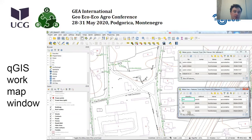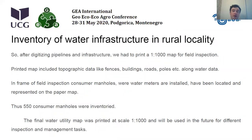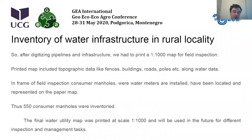This is an example of the QGIS map window. You can see the line map layers, water lines, water points, and their attribute data tables. After digitizing pipelines and infrastructure, we had to print a 1 to 1,000 map for field inspection. The printed map included topographic data like fences, buildings, roads, poles, etc., along with water data. During field inspection, consumer manholes where water meters are installed were located and represented on the paper map. In total, 550 consumer manholes were inventoried. The final water utility map was printed at scale 1 to 1,000 and will be used in the future for different inspection and management tasks.